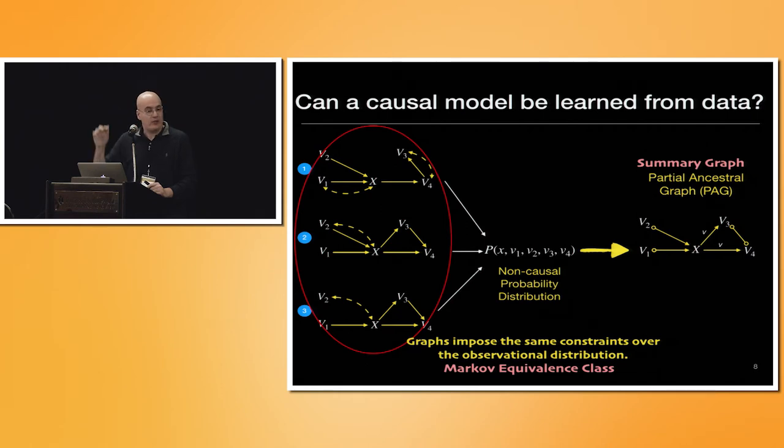What we'll do, instead of going one by one and trying to list, let's operate in a summary graph. In this case, the summary that we use is a partial ancestral graph, or PAG, as known, for multiple reasons.